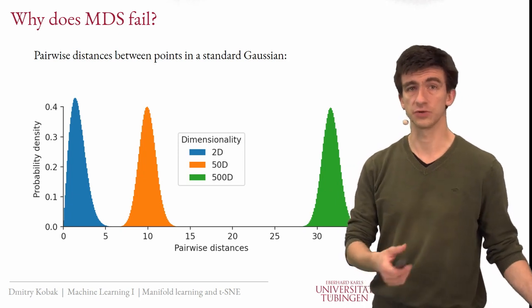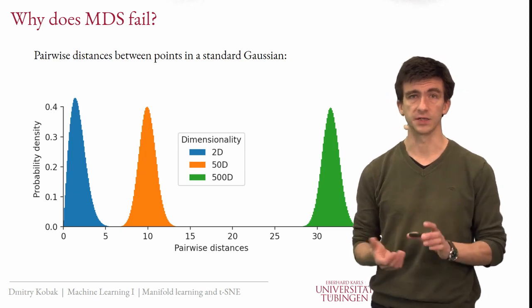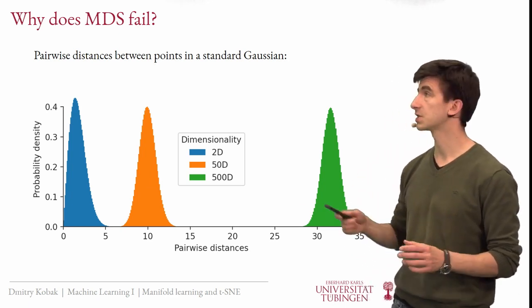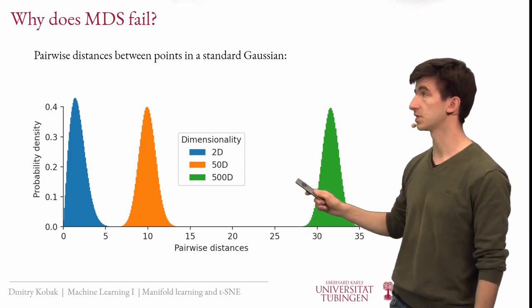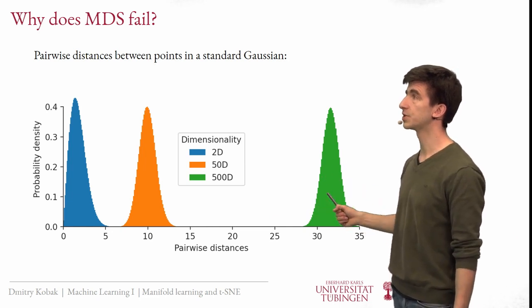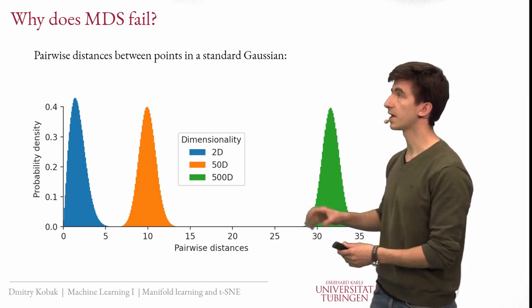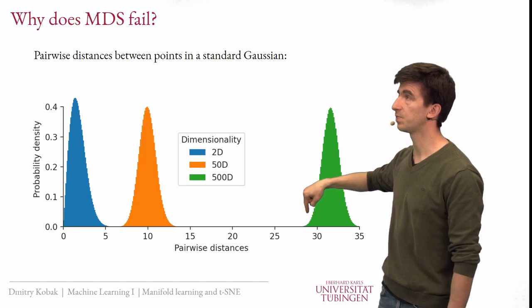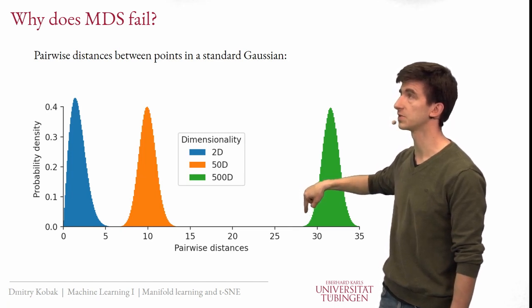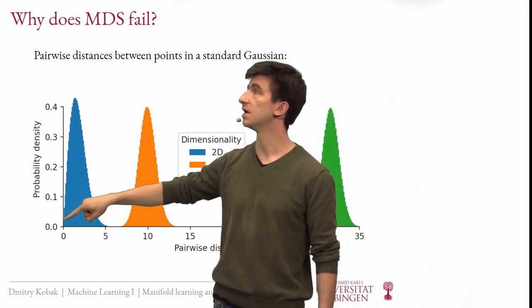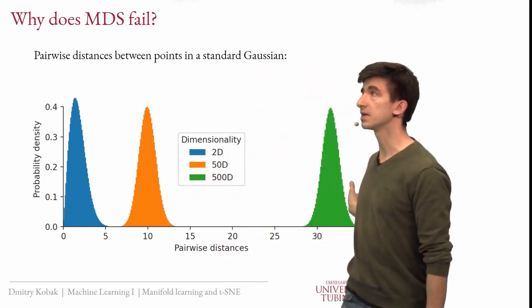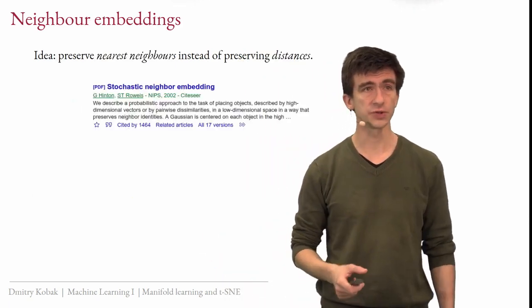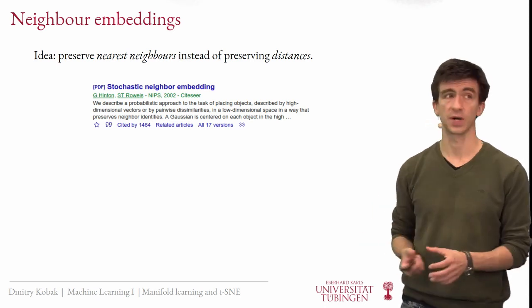The key idea of T-SNE and what I call neighbor embeddings is that we give up on preserving distances entirely — that is not possible, so let's forget about it. Instead, we aim to preserve the rank of the distance, or more specifically, the very left part of the distance distribution. We find neighbors in the high dimensional data — pairs of points that have small distance, living on the left side of the green distribution — and we want to make sure they are mapped to neighbors in two dimensions as well. The rest should be the rest. That is what all these methods are doing.